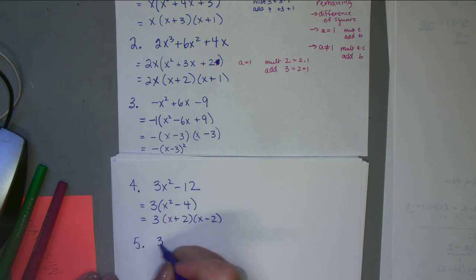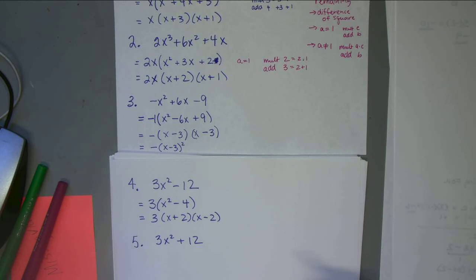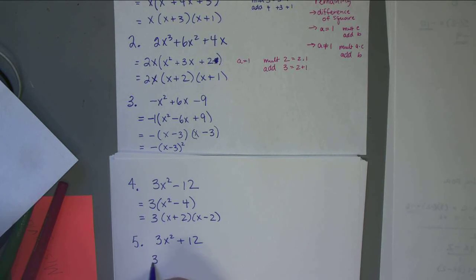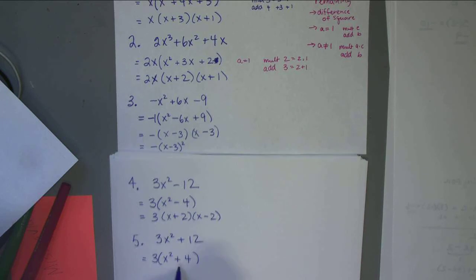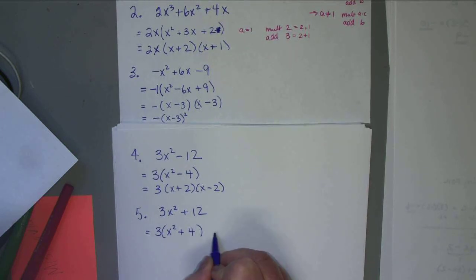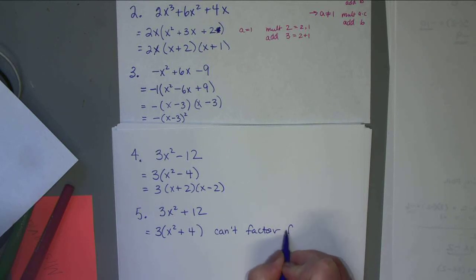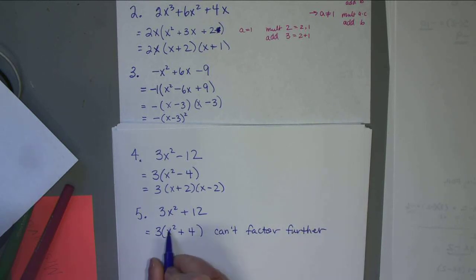For 3x² - 12: common factor is 3, giving 3(x² - 4). This is a difference of squares: 3(x+2)(x-2). But for 3x² + 12: common factor is 3, giving 3(x² + 4). This is a sum of squares and cannot be factored, as we said earlier — a positive sign means it won't factor.